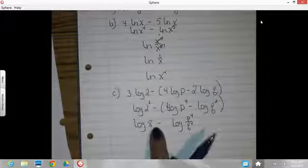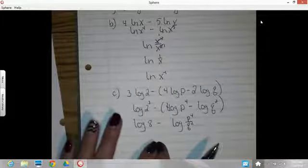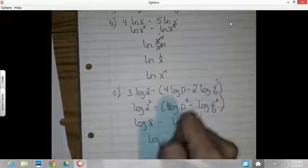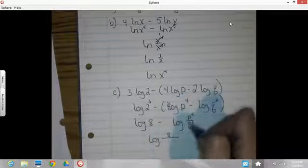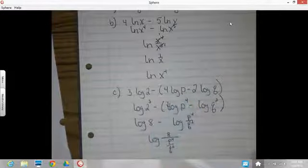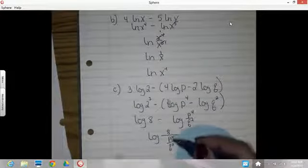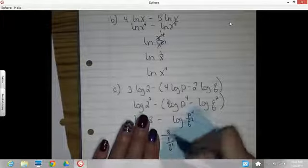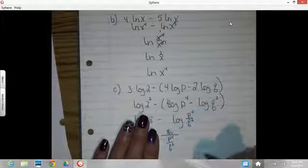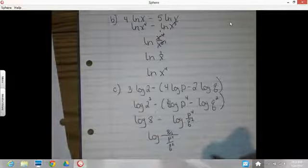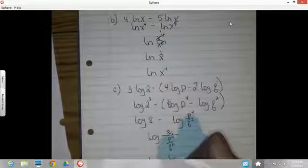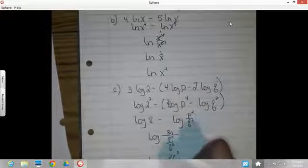Now I've got another subtraction, so I can bring these together as a quotient. So that would be the log of 8 divided by this fraction, p to the 4th over q squared. And now it's just taking care of this ugliness here and carrying the log along. So if I make this 8 over 1, got a fraction divided by a fraction, I'm going to flip and multiply and carry along that log. So if I flip that over, that will give me 8q squared over p to the 4th.